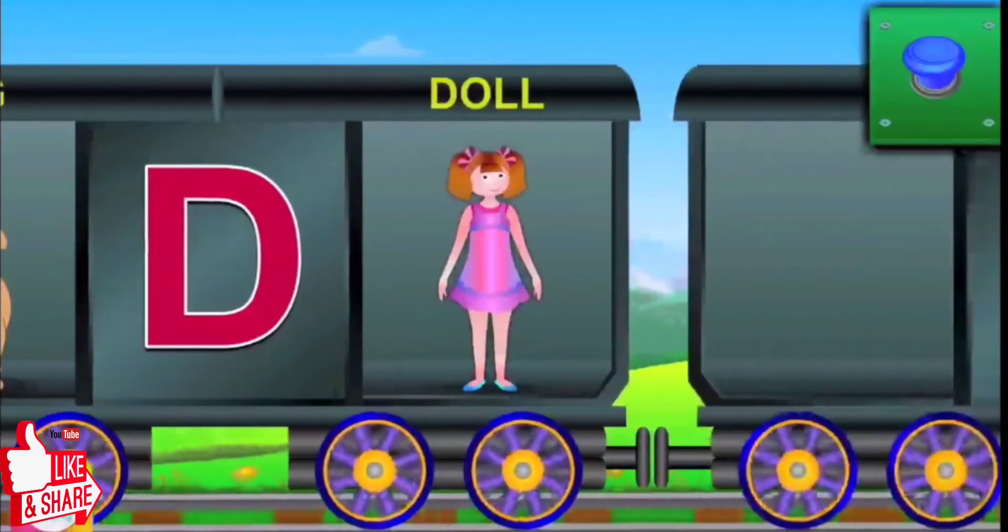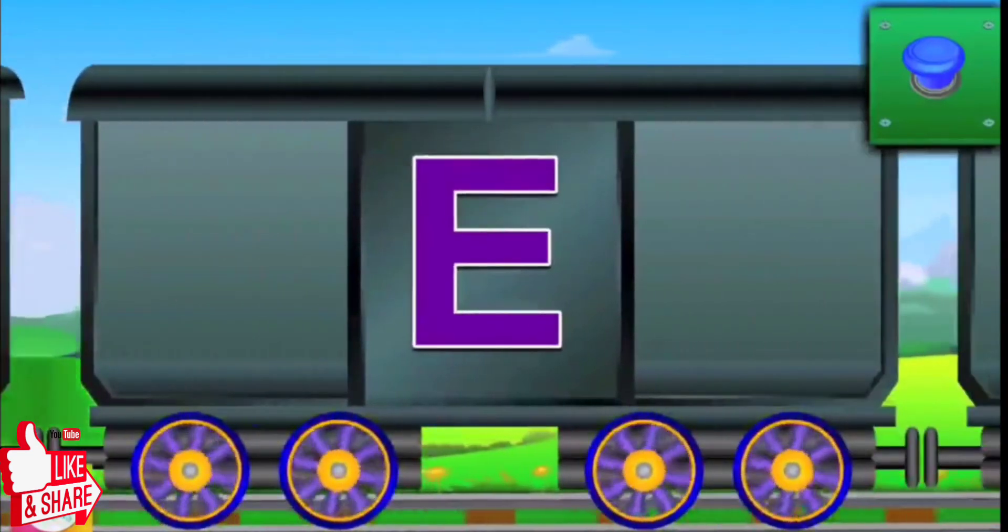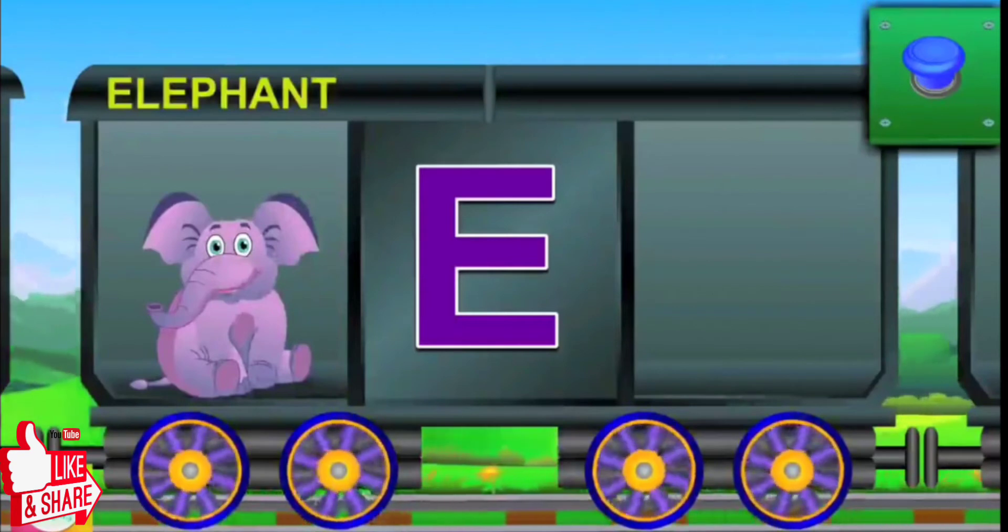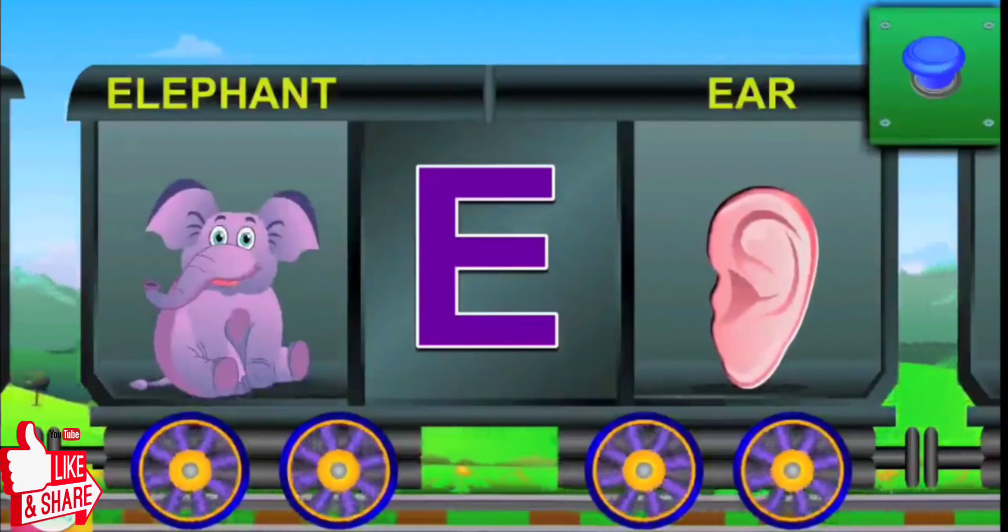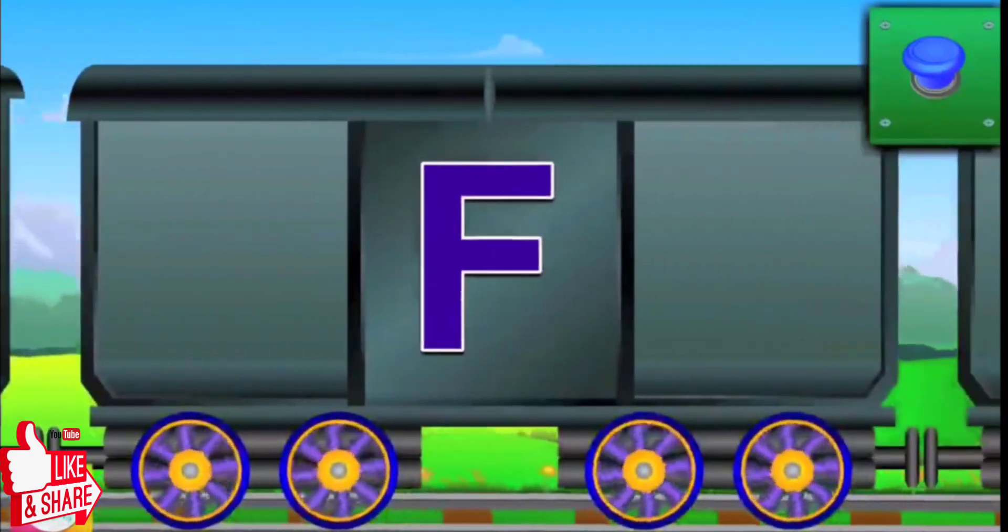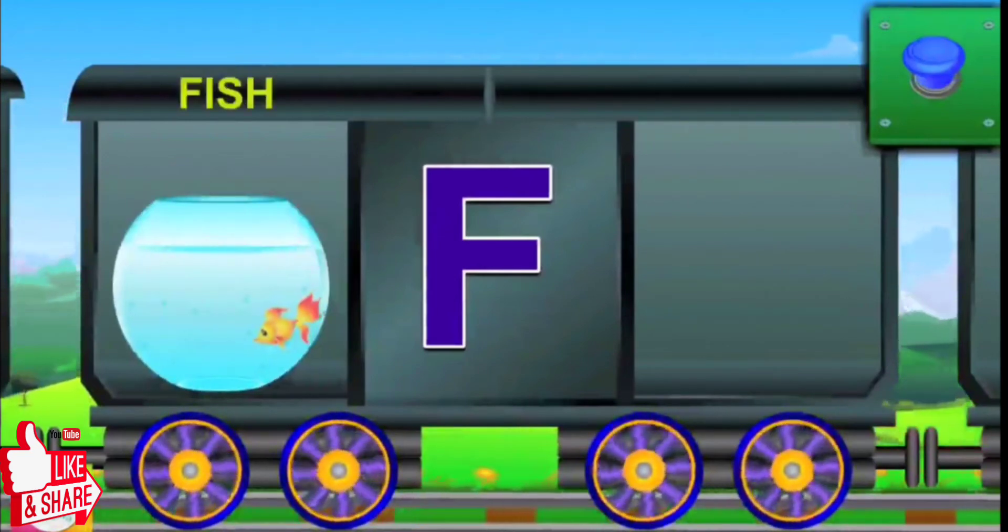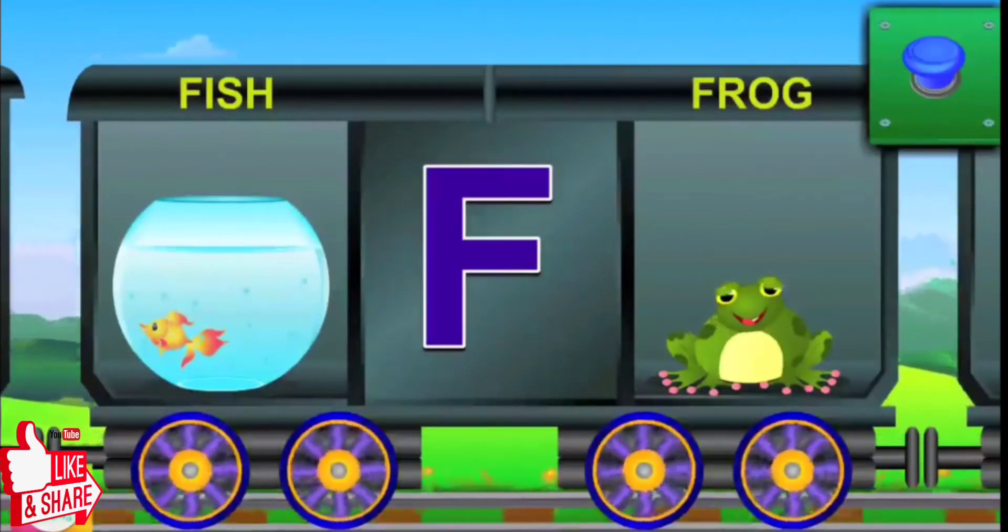E for elephant, and the elephant is huge. E for ear, and the ear hears clear. It's F. F for fish, and the fish lives in the water. F for frog, and the frog eats bugs.